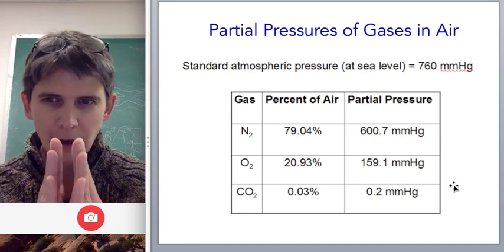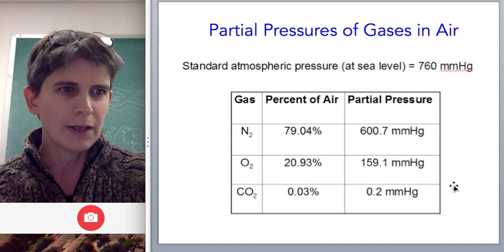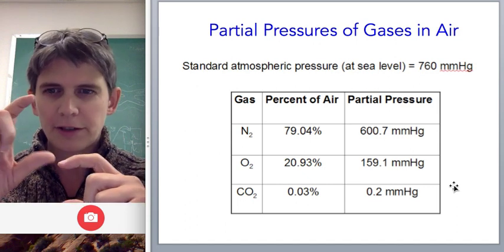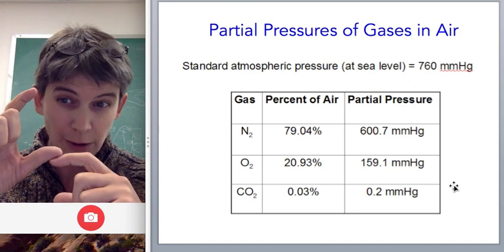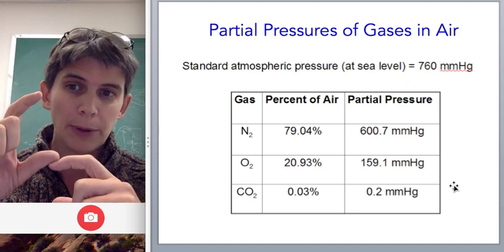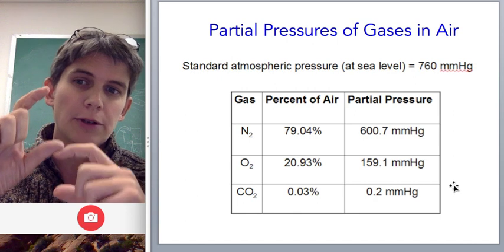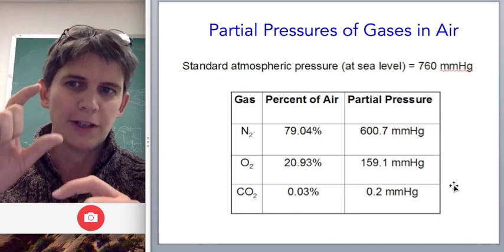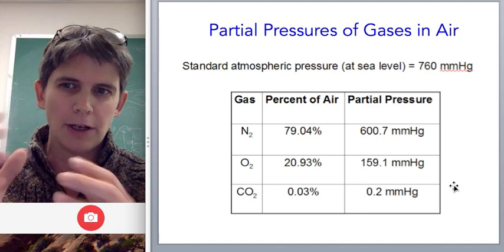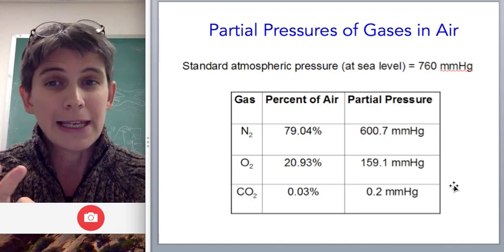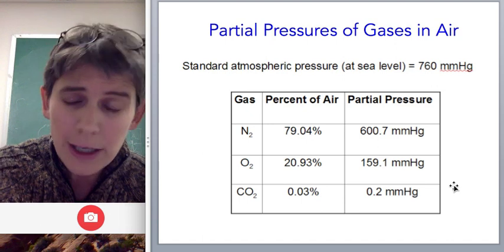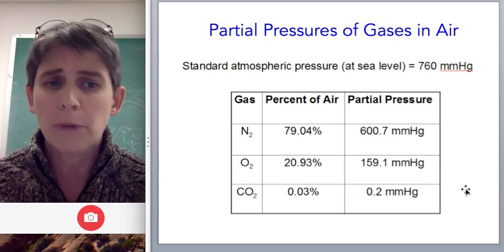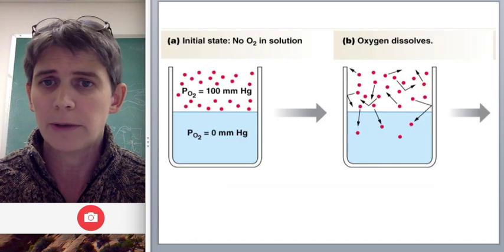If you had a cup of water that was half full and you had oxygen in the air and oxygen in the water and you let those come to equilibrium, then the partial pressure of the oxygen in the water would be the partial pressure of the oxygen in the air. By definition, that amount. But the actual concentration of oxygen in that air and water solution would not be remotely the same. Let me give you an example.